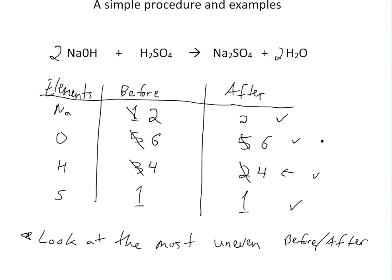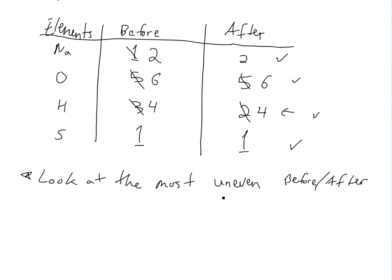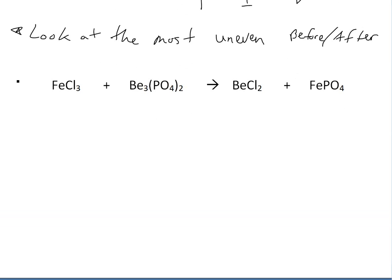So this one's all correct though. Let's go with a bit harder example. Okay so here's basically the second example. It's a bit harder. So it's FeCl3 plus Be3(PO4)2 whatever. I don't know what these are. I saw this somewhere online. Looks like a pretty hard example.